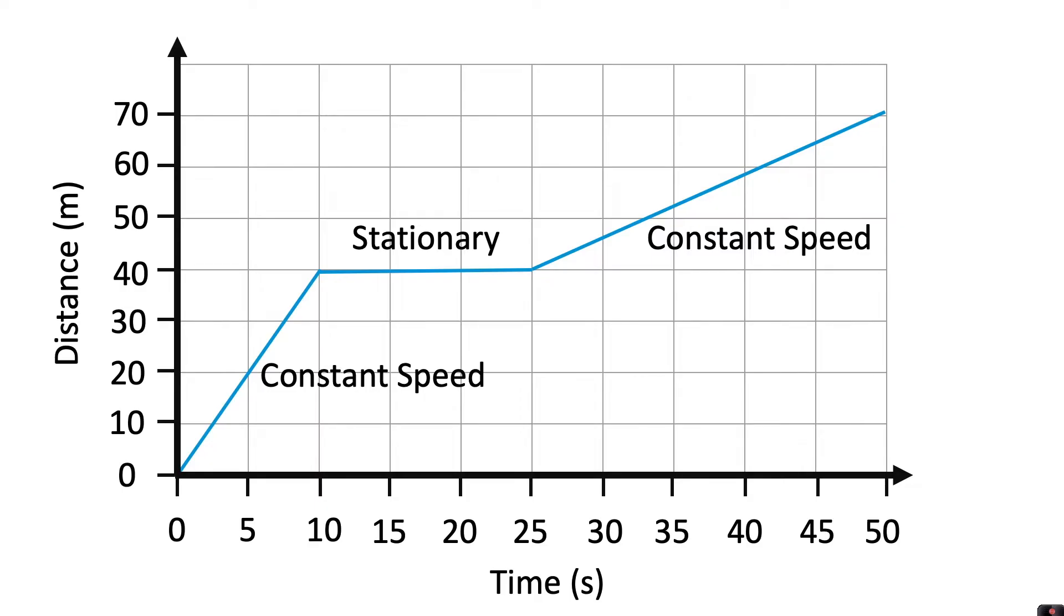The steeper the line, the faster it is travelling. So the first part of this graph is a lot steeper than the last part of the graph, so it's travelling faster first of all and then when it's less steep it's travelling a lot slower.